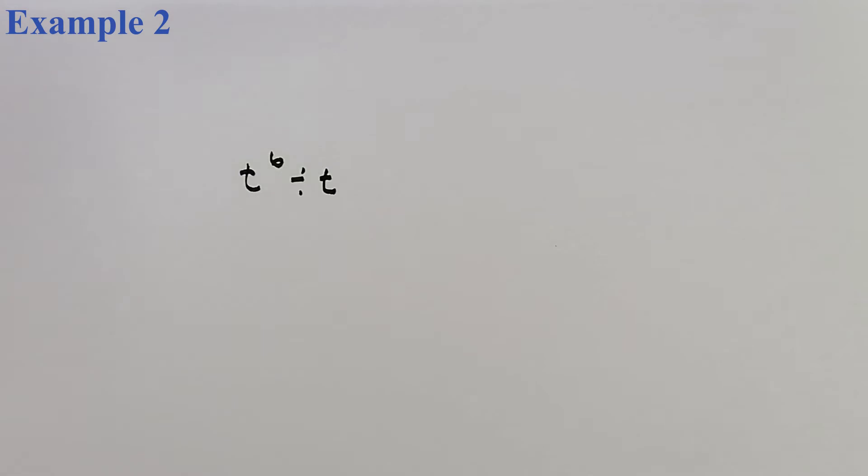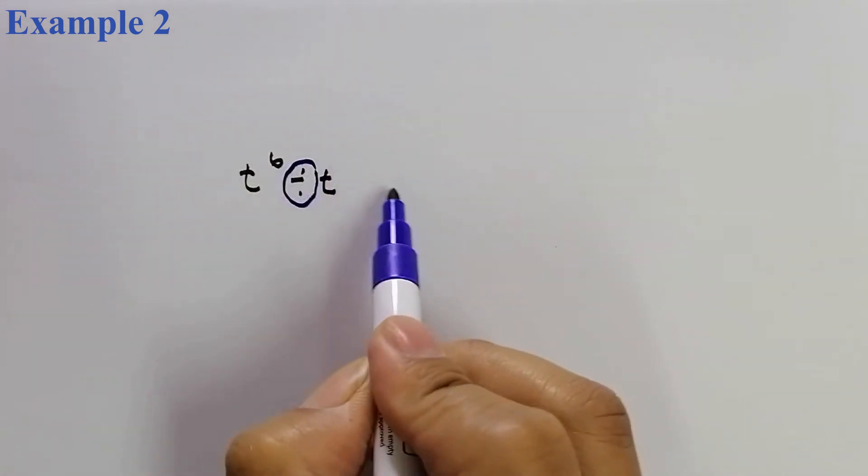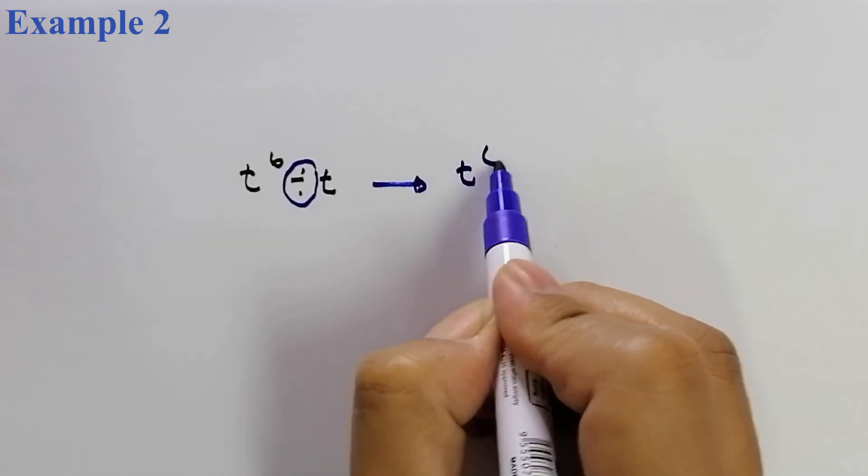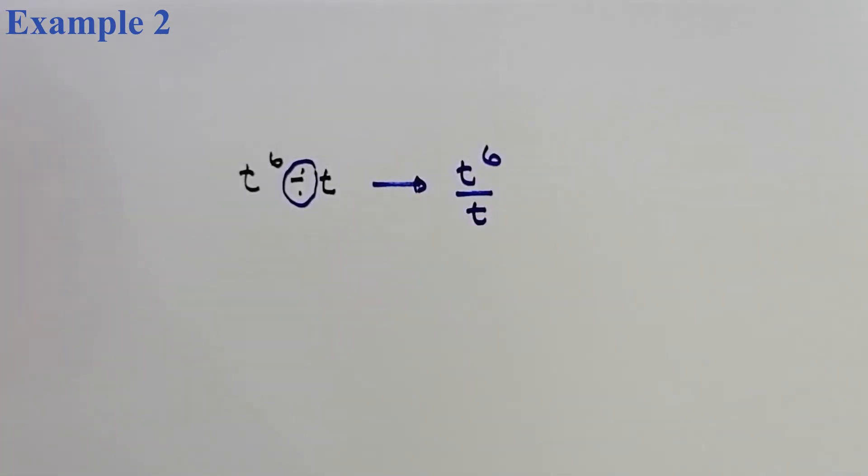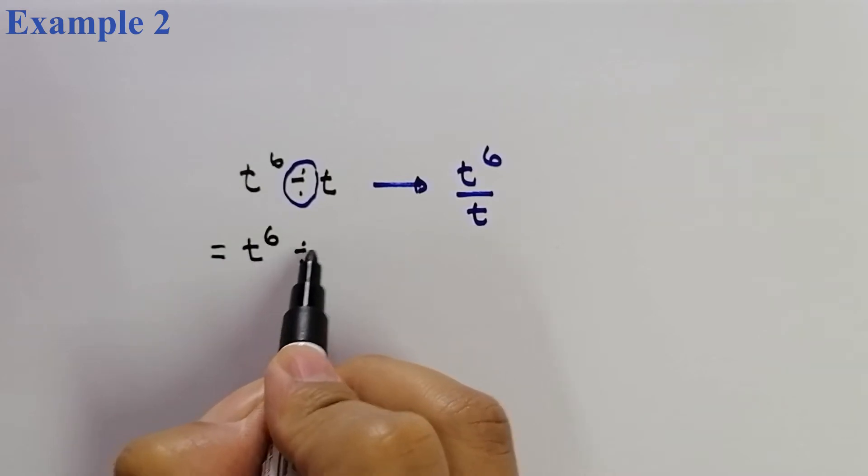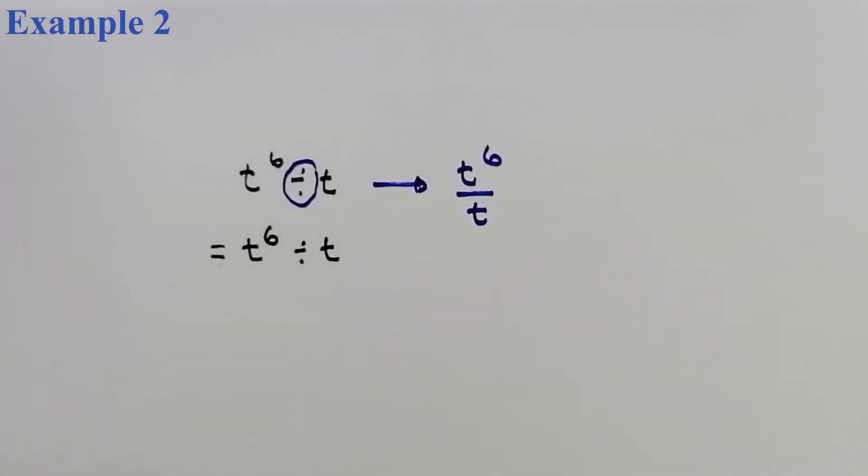Contoh ini juga merupakan division. Perbezaan dia adalah hanyalah pada bahagian rotation. Ini juga boleh tulis sebagai T power of 6 over T. So, kalau you tengok dekat sini, T power of 6 divided by T, T plus 1, yang ini, actually, dia adalah T power of 1. T power of 1, normally, power of 1 biasanya kita tulis sebagai nombor itu sendiri.